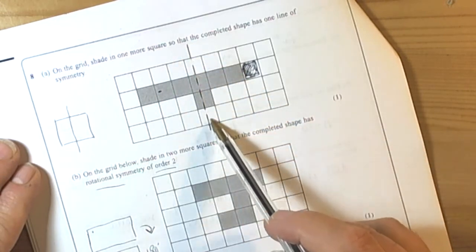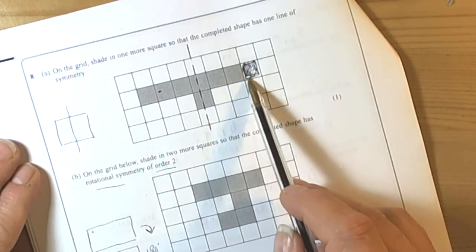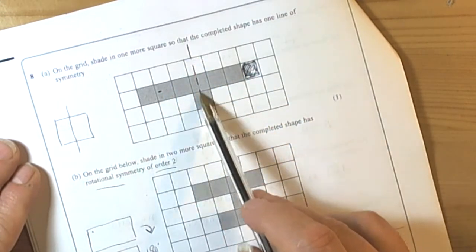We can see that if we draw a line straight down the center here, we can create a shape. We put shading in this one square here and that will give us the line of symmetry.